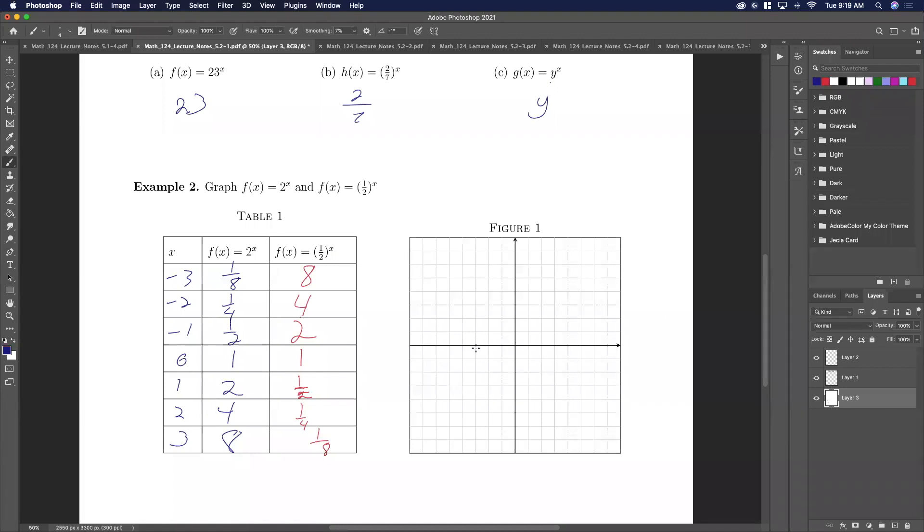Let's graph this. So at minus 3, we're pretty low here. We'll be a fourth here, a half here, 1 here. Here we're at 2. We're at 2, and I didn't hit 2. Here we're at 4, and here we're at 8. And so we have this exponential curve right here. That was a terrible drawing of that. That's a little bit better. And then here in red, here we're at 8, here we're at 4, here we're at 2, and that's a half, a fourth, an eighth.